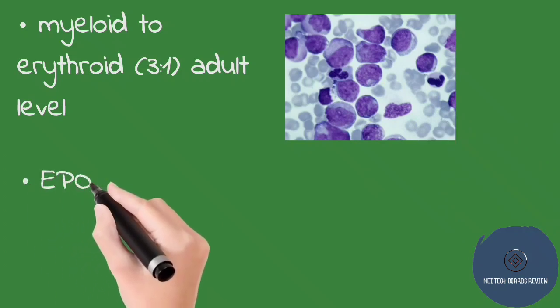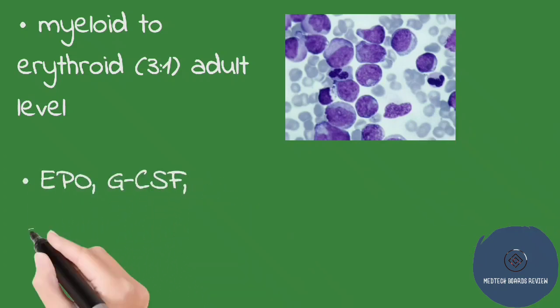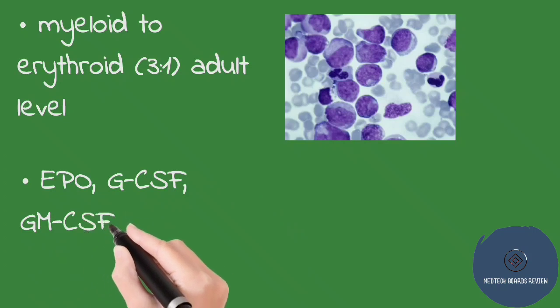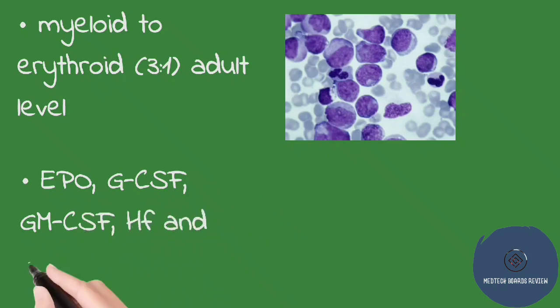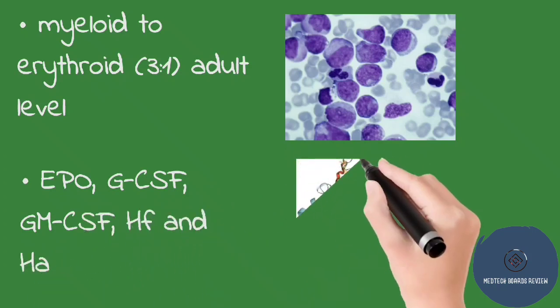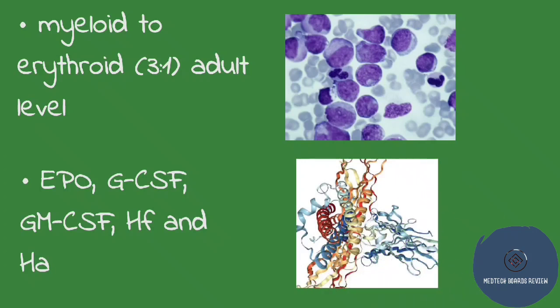There is also detectable amounts of erythropoietin (EPO), granulocyte-macrophage colony-stimulating factor (GM-CSF), granulocyte colony-stimulating factor (G-CSF), and hemoglobin F and A. These are growth factor proteins that help in the production of blood cells.